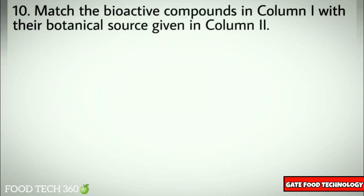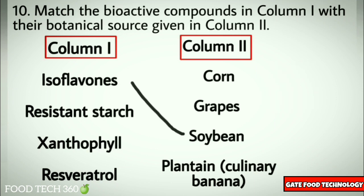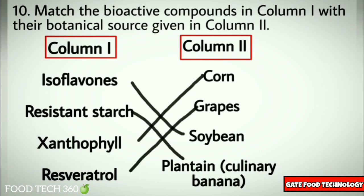Question number ten: Match the bioactive compounds in column one with the botanical source given in column two. Isoflavones corresponds to soybeans; resistant starch corresponds to plantain (culinary banana); xanthophyll corresponds to corn; resveratrol corresponds to grapes.